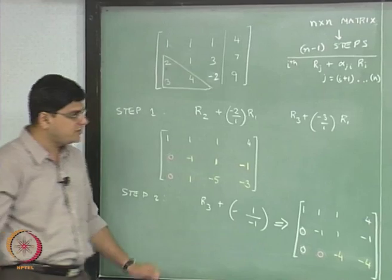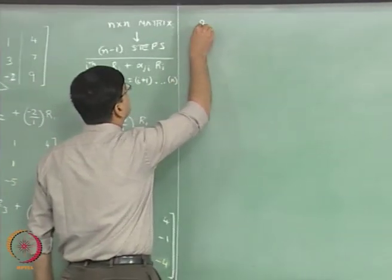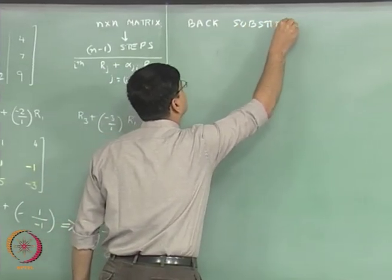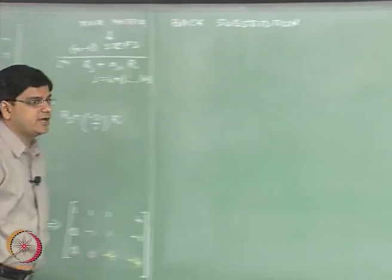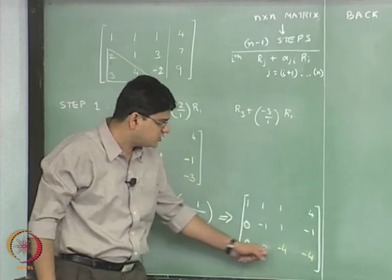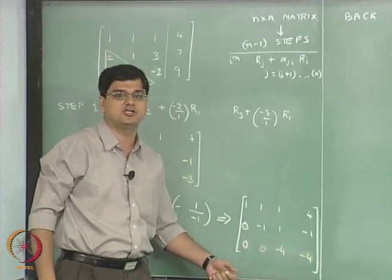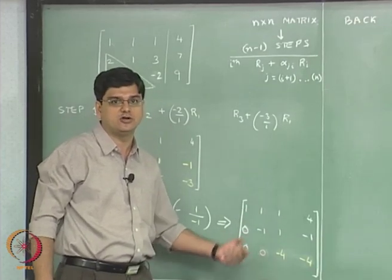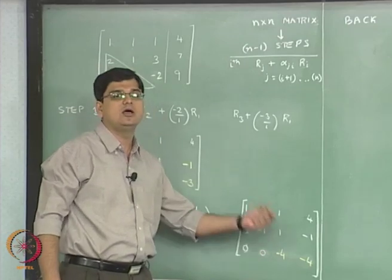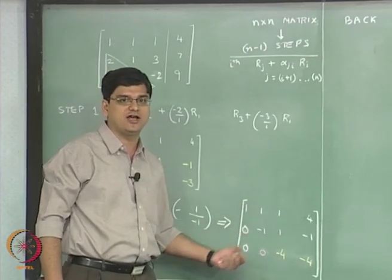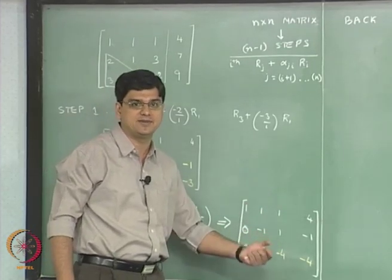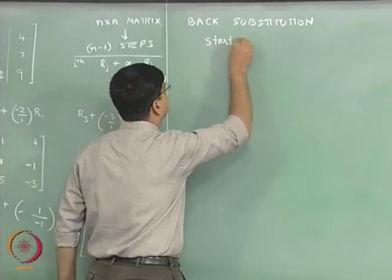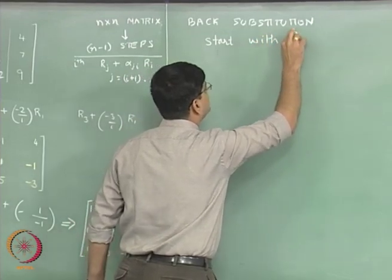Next, we do the back substitution step. In back substitution, we first use the last equation to get x_n. Then we use the n-1th equation and the value of x_n to get x_{n-1}. We use the n-2th equation and the values of x_{n-1} and x_n to get x_{n-2}, and so on. So we start with the nth equation.